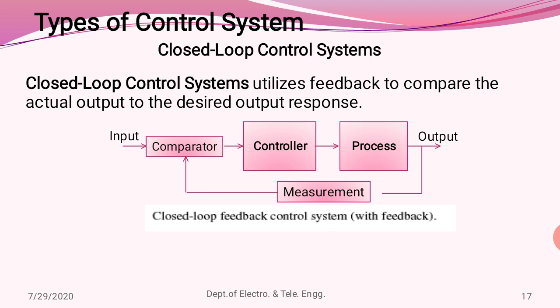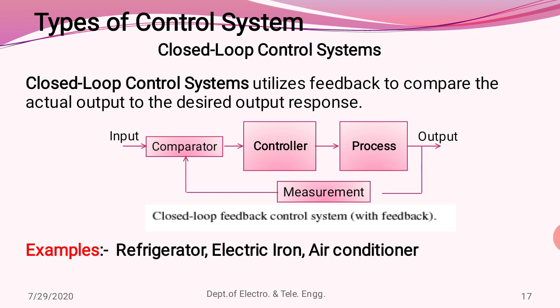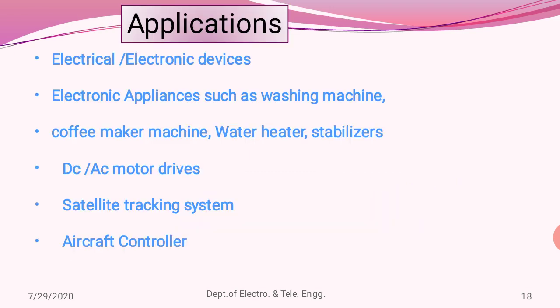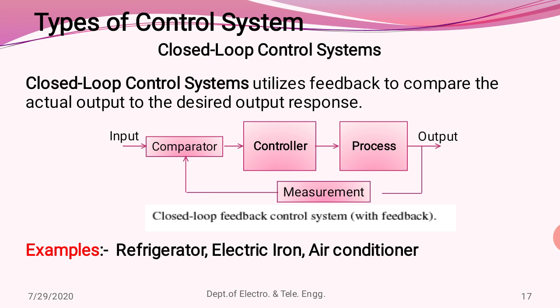In a closed loop control system, the output signal is fed back to the input. The quality of the output is compared by a comparator signal. Once the comparison is done, the system is adjusted as per the requirement, the controller processes the required input, and produces the desired output. Basic examples of closed loop systems include refrigerators, electric irons, and air conditioners. For instance, in a refrigerator, whenever the temperature decreases below the normal room temperature, automatic refrigeration operation takes place to keep the refrigeration process running.